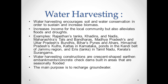Water harvesting means saving water for future use. It encourages soil and water conservation to sustain and increase biomass, increases income for the local community, and helps to prevent floods and droughts. Examples include Rajasthan's tanks, Khadins and Nadins; Maharashtra's Tals and Bandharas; Madhya Pradesh and UP's Bundis; Bihar's Pines and Ahars; Himachal Pradesh's Kools; Kattaz in Karnataka; Ponds in the Kandhi belt of Jammu; Eris in Tamil Nadu; and Surangams in Kerala. These are crescent-shaped earthen embankments or concrete check dams built in seasonally flooded areas. The main purpose is to recharge groundwater.